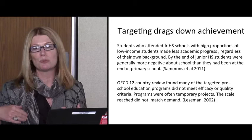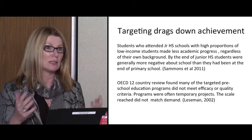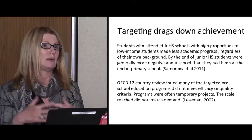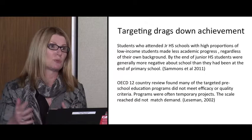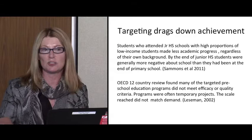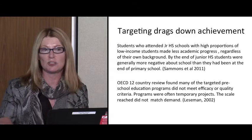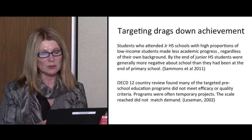We also find that targeting programs tends to bring down outcomes for all kids. From the large UK longitudinal study, children from moderate and more affluent families who went to junior high schools where the majority of students were low-income and disadvantaged saw their performance, their attitudes toward schooling, and their satisfaction with schooling all go down. When the percentage was flipped, everybody's outcomes went back up.